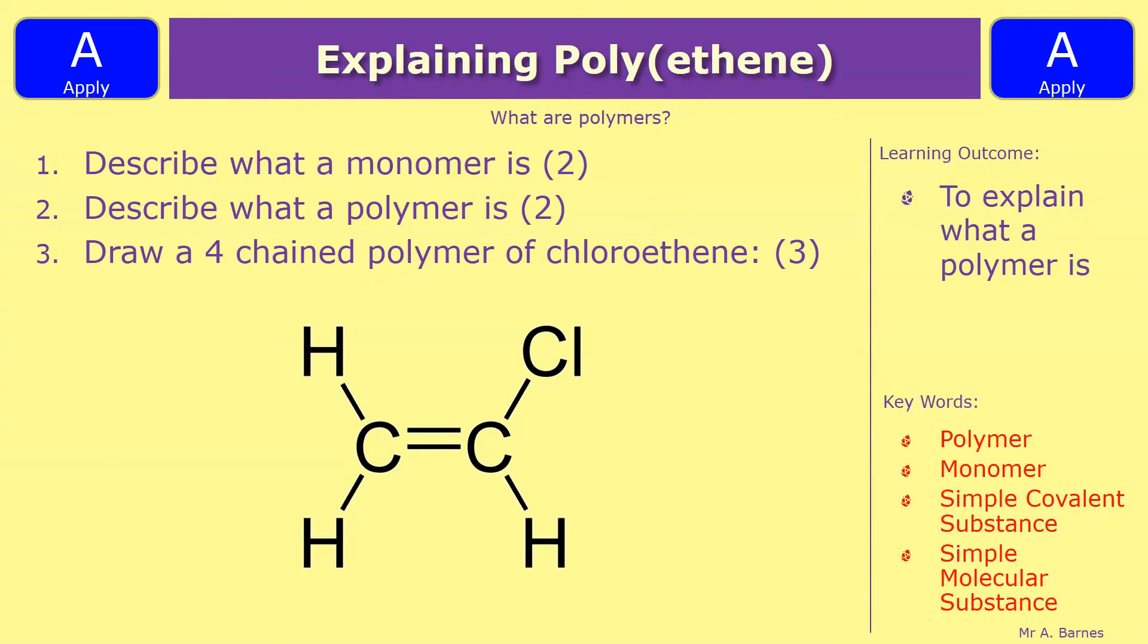Okay then let's have a look at a few questions. The first one says describe what a monomer is. Second one what's a polymer. Both worth two marks. And then the third one draw a four chained polymer of chloroethene. They've given you the molecule down below. So pause the video, have a go and we'll see how you've done in a minute.